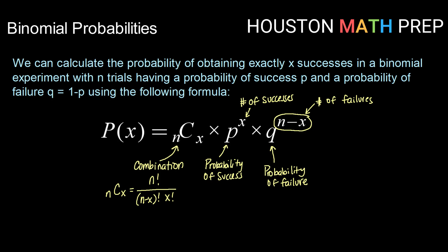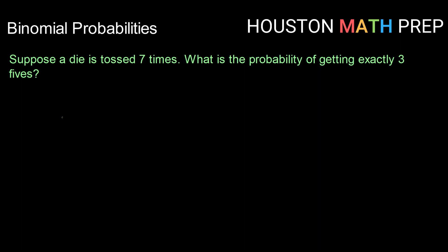Okay, we've got our formula. Let's see it in action. Suppose a die is tossed seven times. What is the probability of getting exactly three fives?